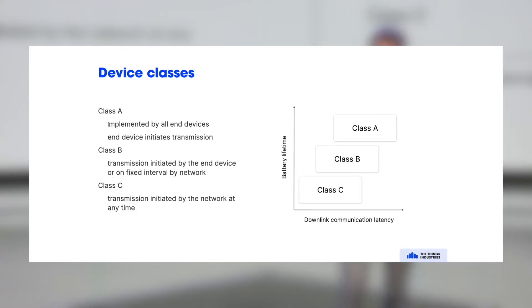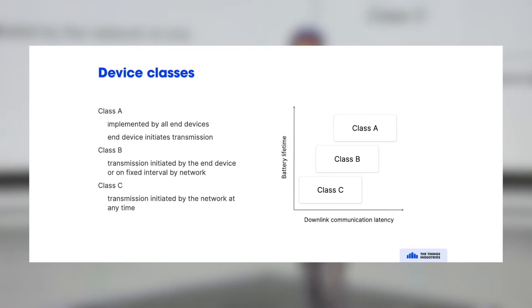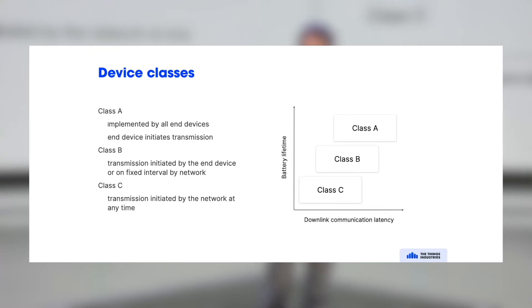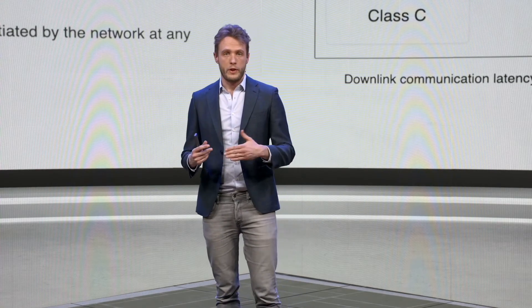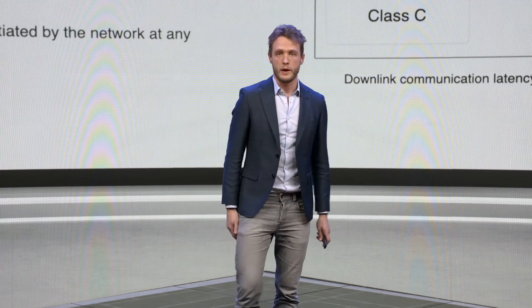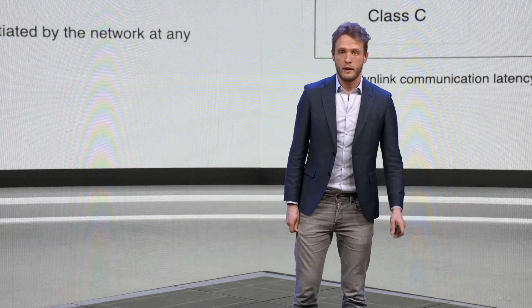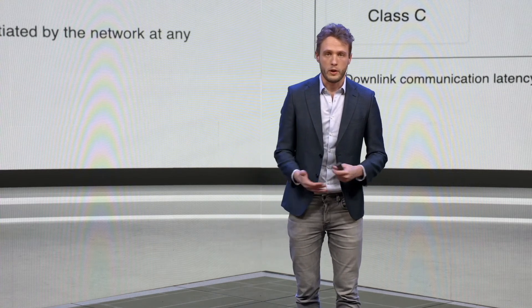What's really important in LoRaWAN is the device classes, and there are three of them. Class A is implemented by all LoRaWAN devices — the end device can initiate a transmission and send a message at any time. This is typically used by sensor nodes or devices that send a heartbeat on a regular interval, reporting battery level and sensor status.